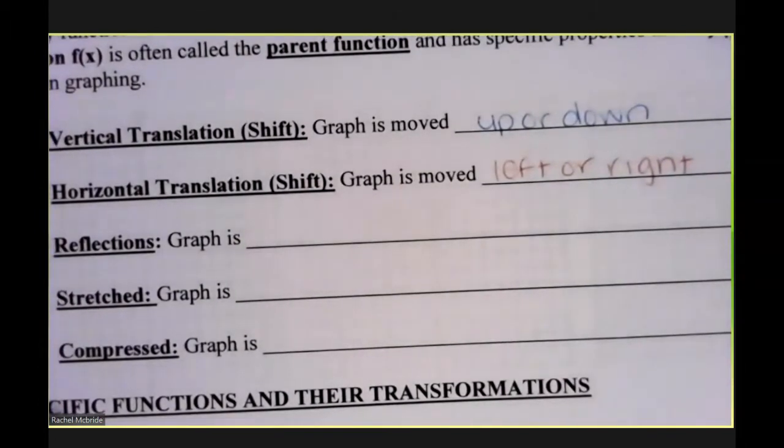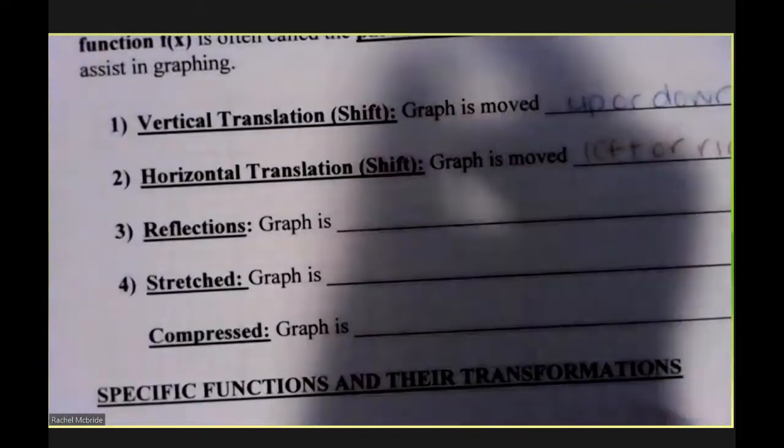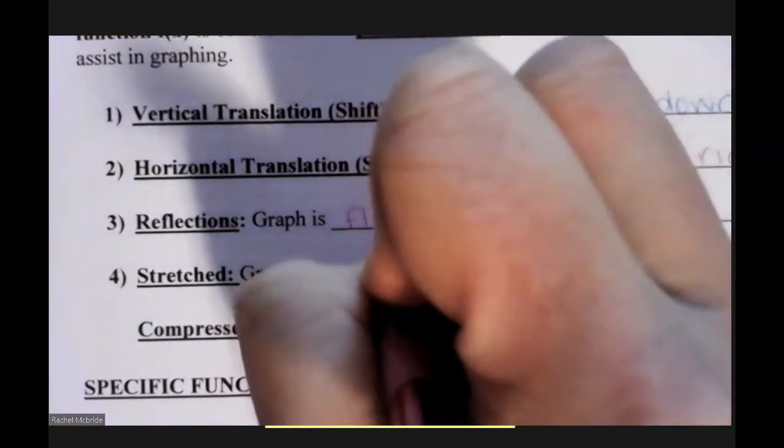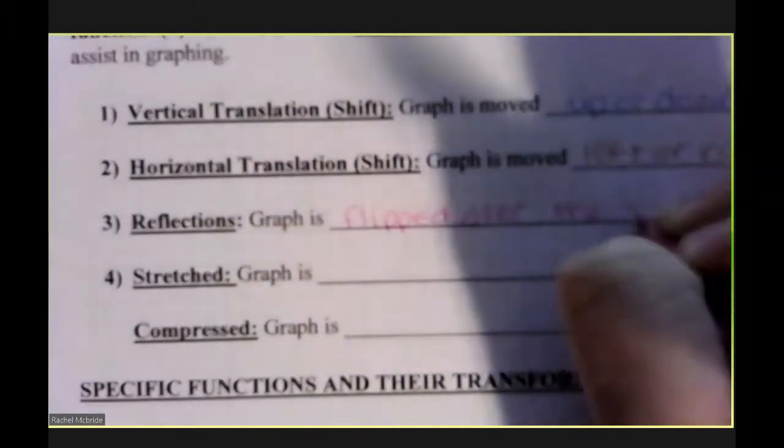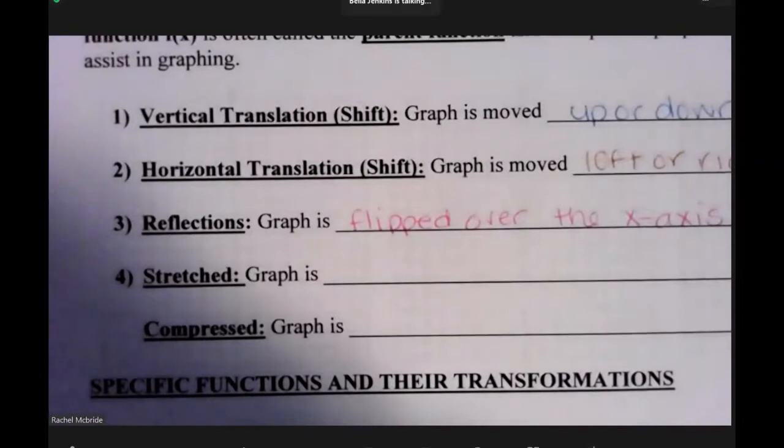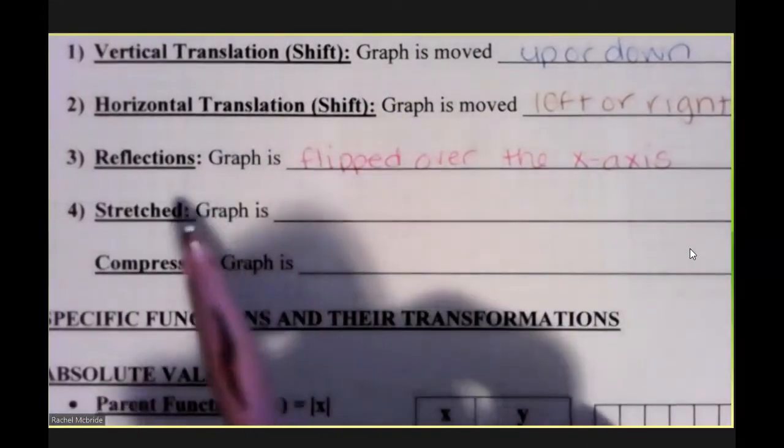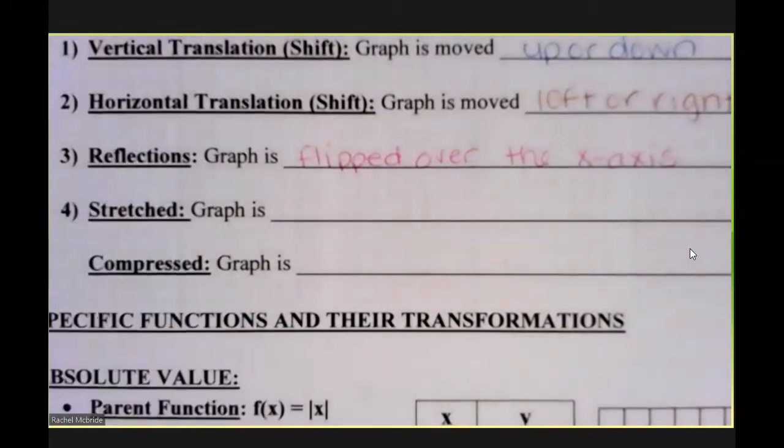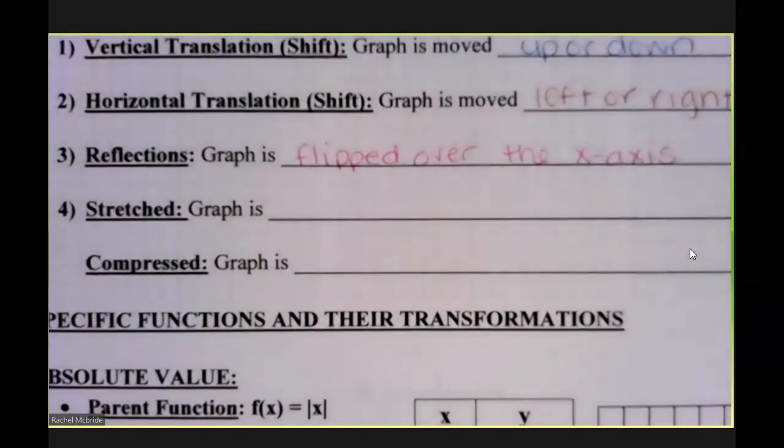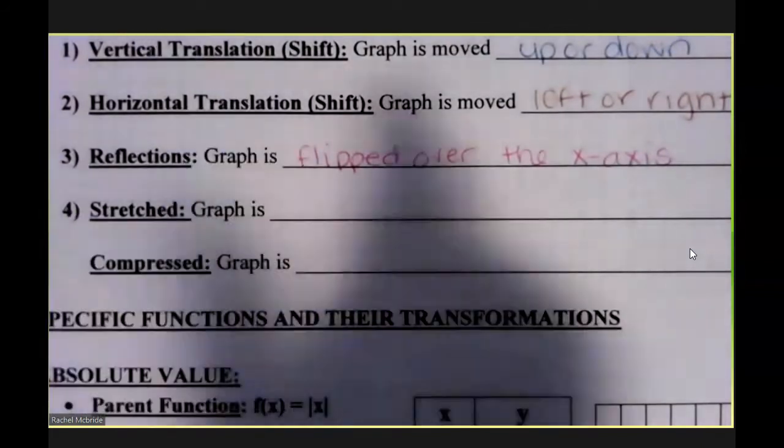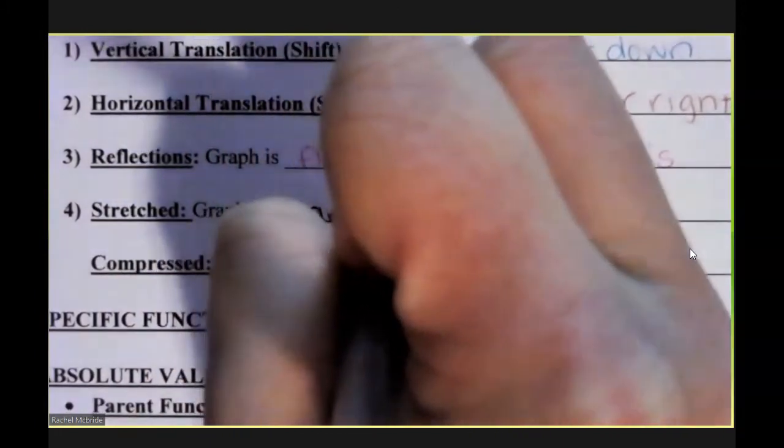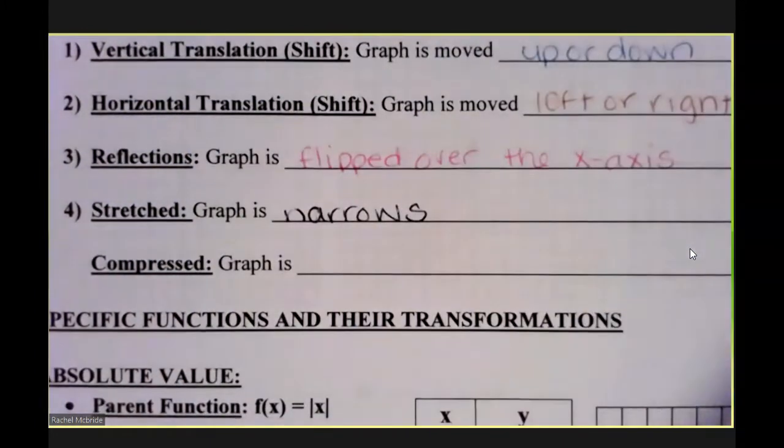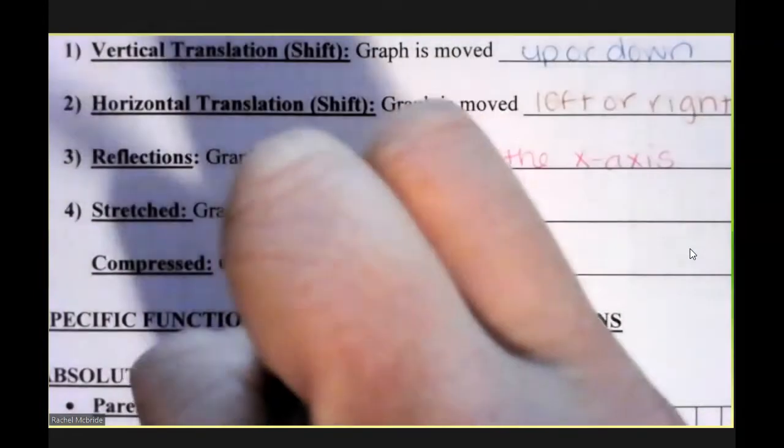A reflection is when a graph is flipped over the x-axis. If a graph is stretched, then it's going to become more narrow vertically. And if a graph is compressed, it becomes wider.